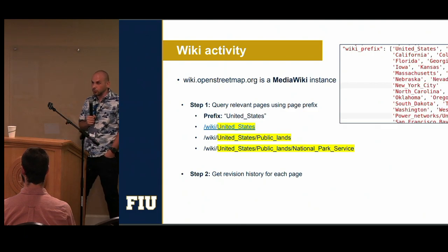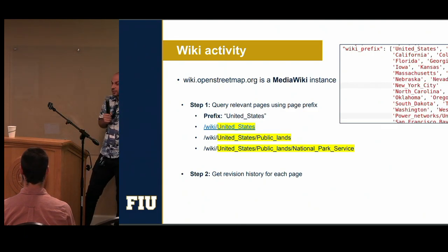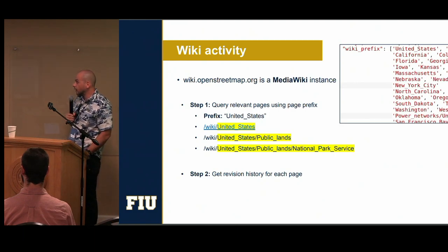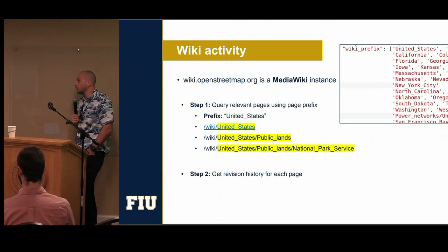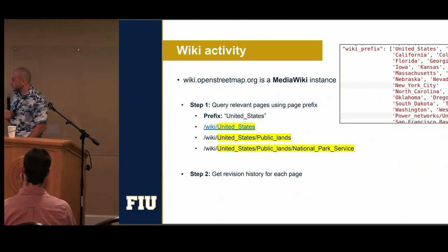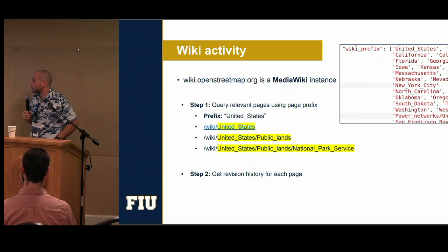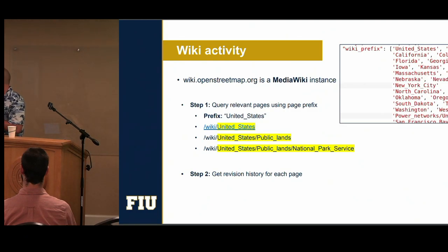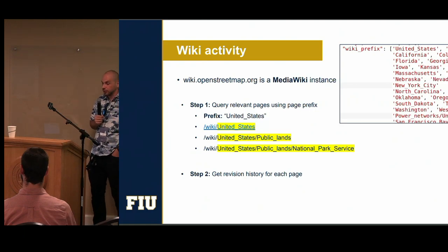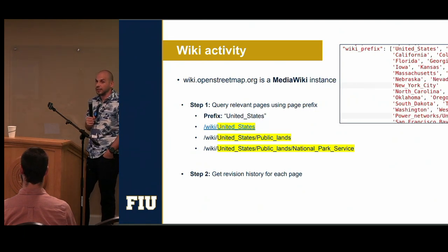What I'm trying to do is get this data on a country scale — here's an example for the United States. The wiki.openstreetmap.org runs on software called MediaWiki, which has an API, so it's possible to programmatically get a history of all the edits. I identified prefixes of relevant pages — for example, United States and different states. In the first step, I'm querying to find all relevant pages for the United States. When I search using this prefix method, I get the main US page but also sub-pages for public lands and multiple levels down. In the second step, I'm building a history of all the edits in the wiki that have ever been made related to the United States.